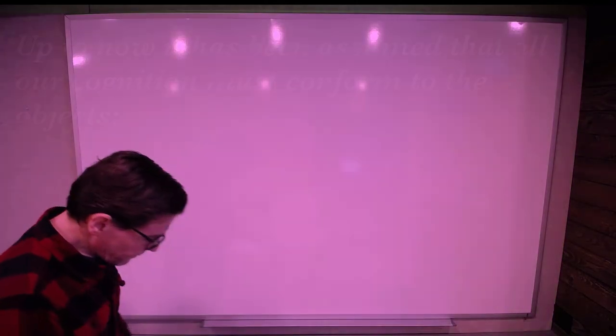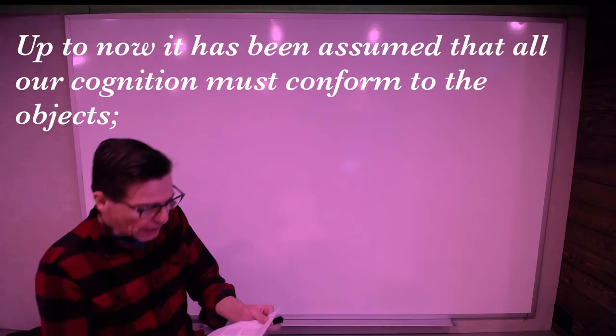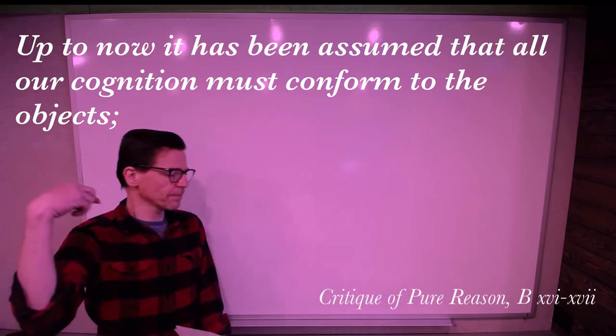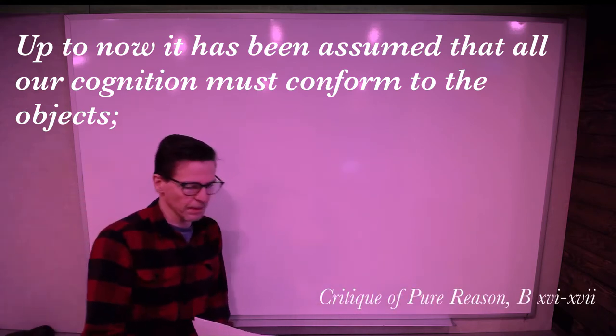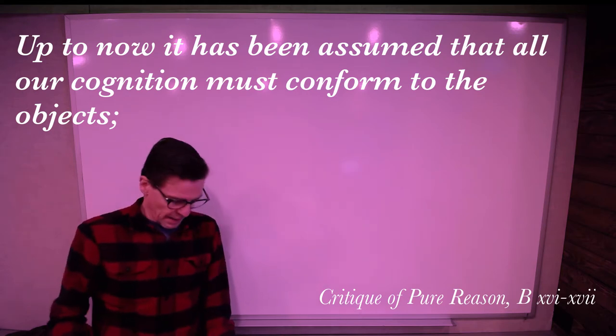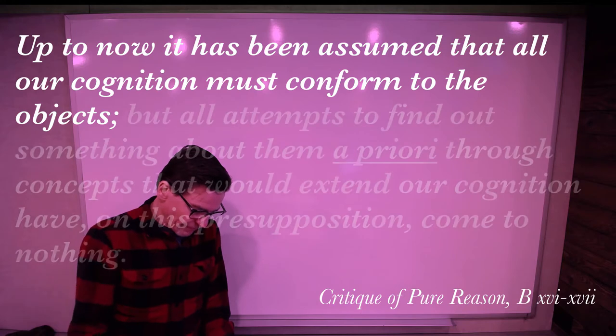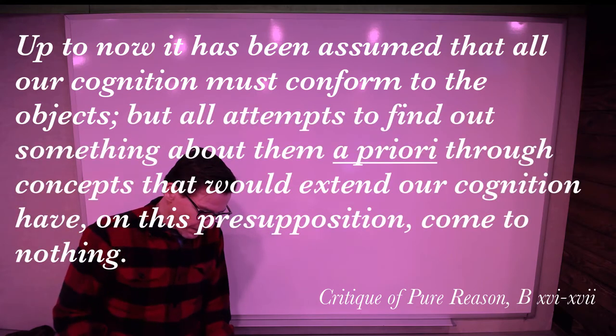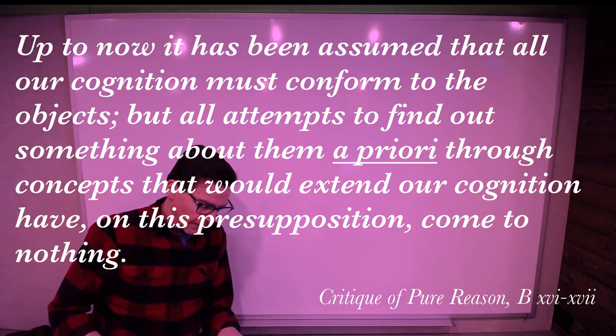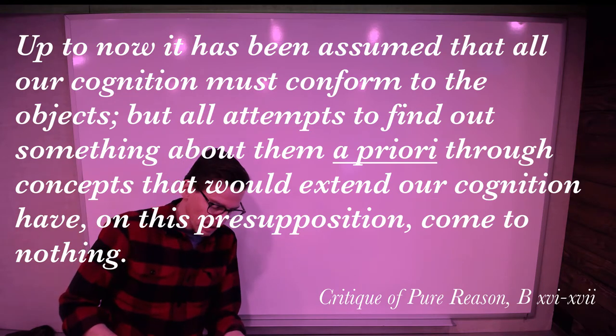Kant says up to now it has been assumed that all our cognition must conform to the objects. That's the basic assumption that both the Cartesians and rationalists as well as the empiricists had made. But all attempts to find out something about them a priori through concepts that would extend our cognition have on this presupposition come to nothing.